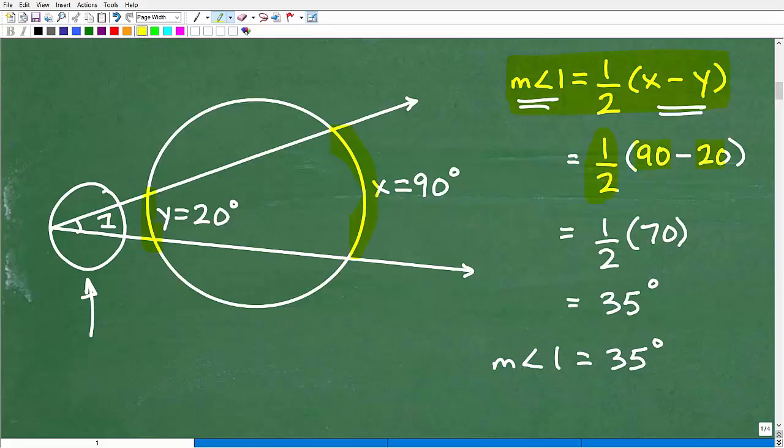So let's go ahead and just plug in the information. So one half, 90 minus 20, which of course is 70. So one half times 70, we're subtracting these arcs. That's what the formula tells us to do is 35. So the measure of angle one is 35 degrees.